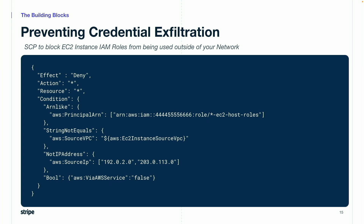This is the most basic form of the SCP that blocks roles from being used outside of the network. We're going to deny all actions on all resources if all four conditions are true. The first condition helps target only EC2 instance roles — the minimum granularity for SCPs is the entire account, so we use the principal ARN condition to specify which roles to lock down. If EC2 roles don't have names matchable with a glob pattern, you can target roles based on their tags. Condition number two, string not equals, returns true if the request is made outside of our VPC. The source VPC condition key is only available if the request is made through a VPC endpoint. If not routed through a VPC endpoint, we rely on condition three: not IP address, which returns true if the request was not made from one of our trusted IPs.